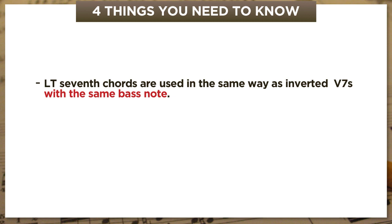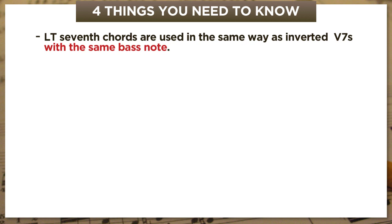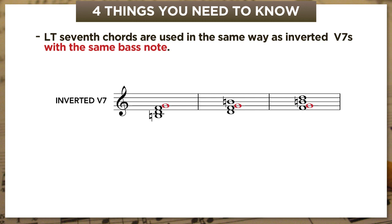So now, I want to look really systematically at point number 3 here—the idea that 7 diminished 7th chords are used in the same way as inverted V7s with the same bass note. Another way of saying this is that for every inversion of V7, there's a roughly equivalent 7 diminished 7 chord—one that has the same bass note and does more or less the same thing most of the time. Let me show you what I mean. Here are the three inversions of V7 in the key of C. When we have scale degree 7 in the bass, we have V6-5. When we put scale degree 2 in the bass, we have V4-3.